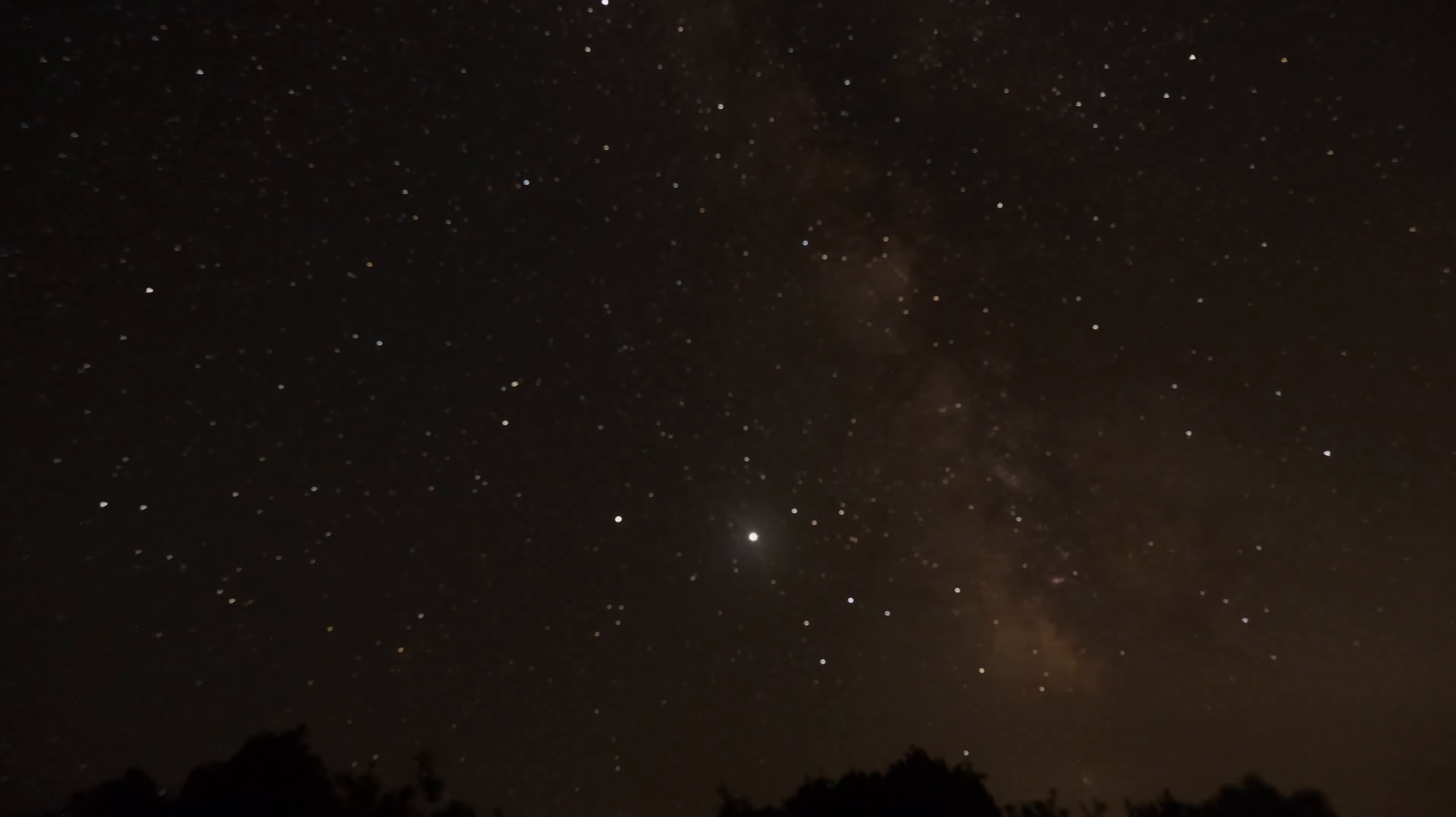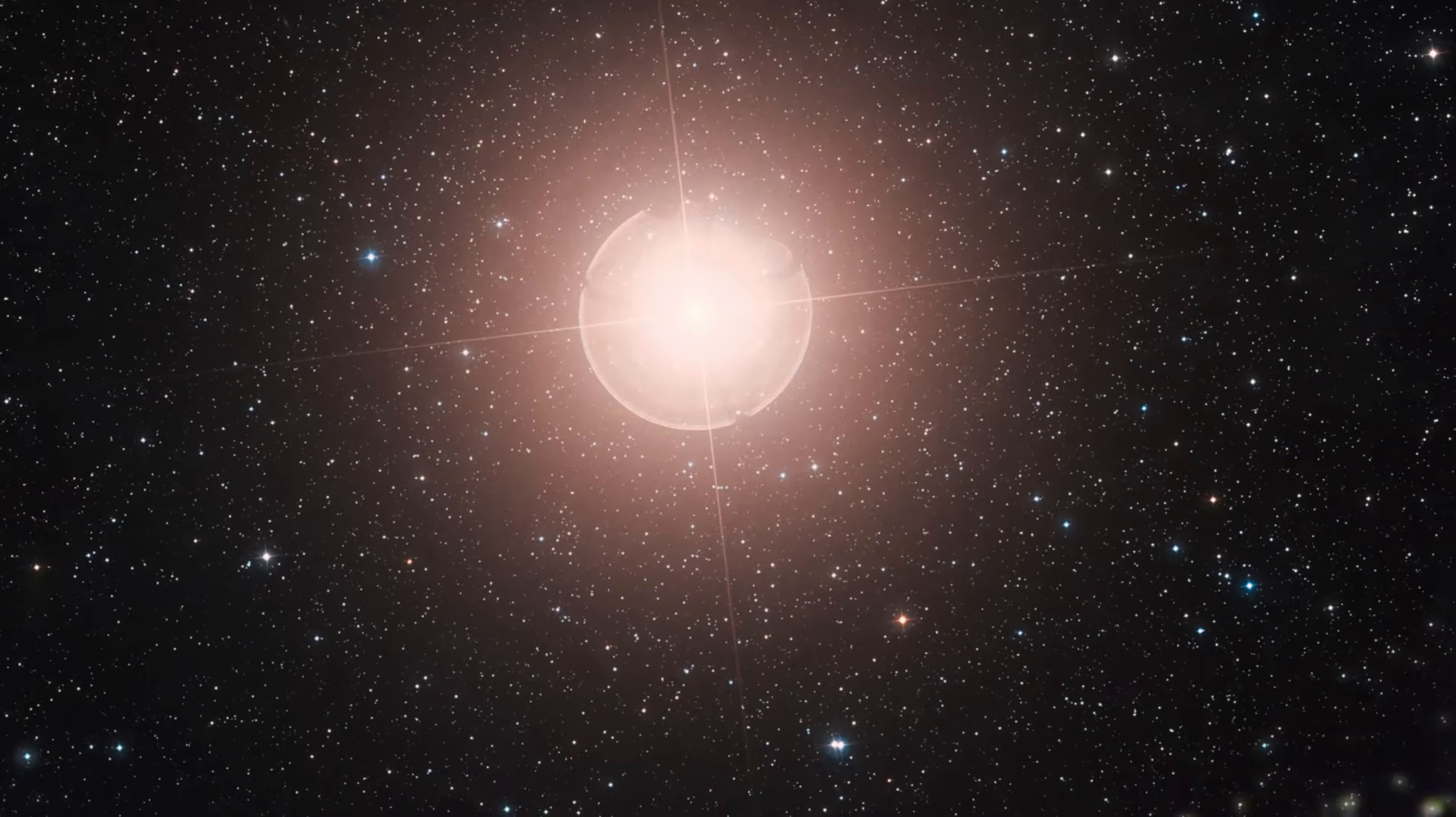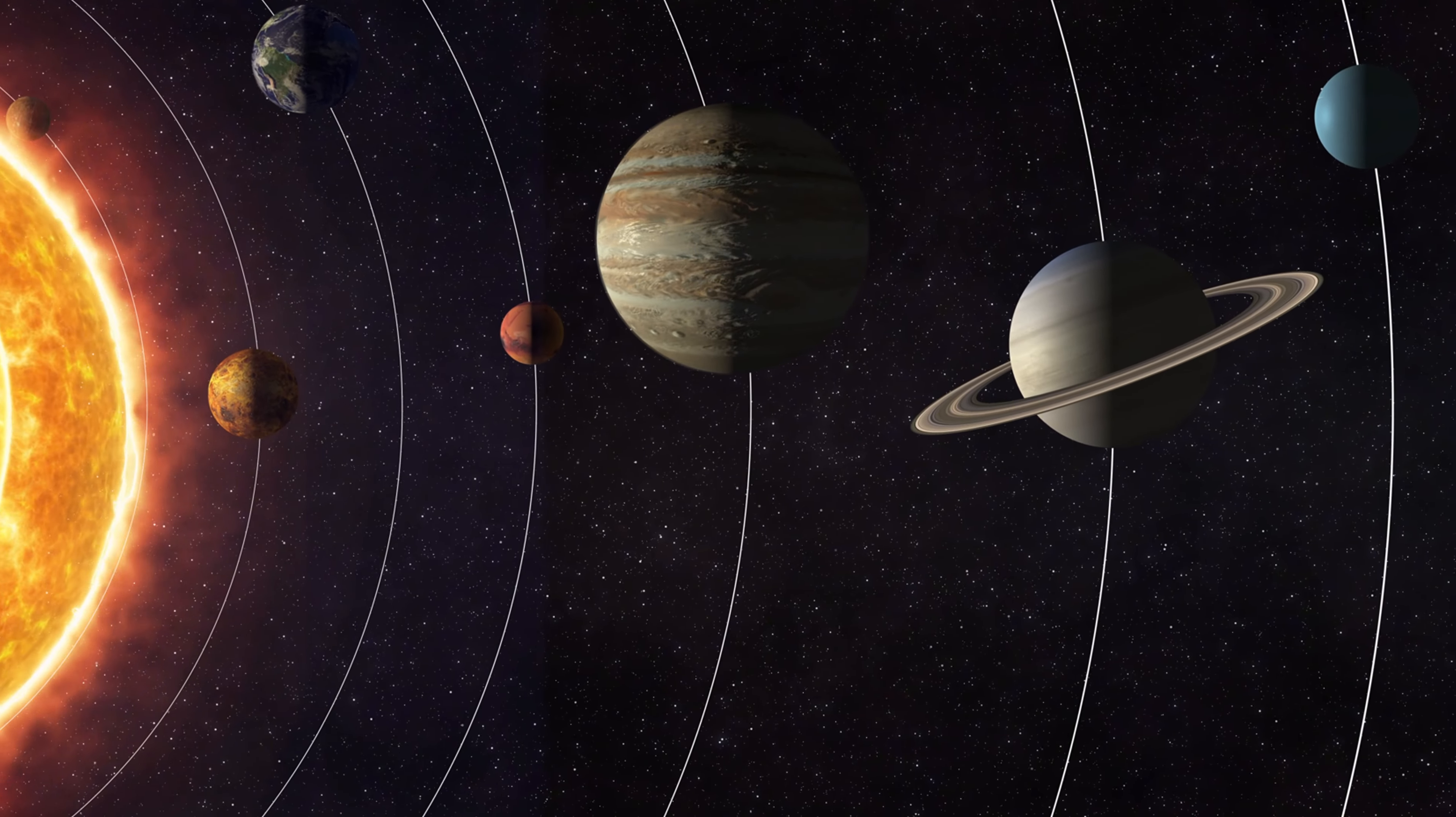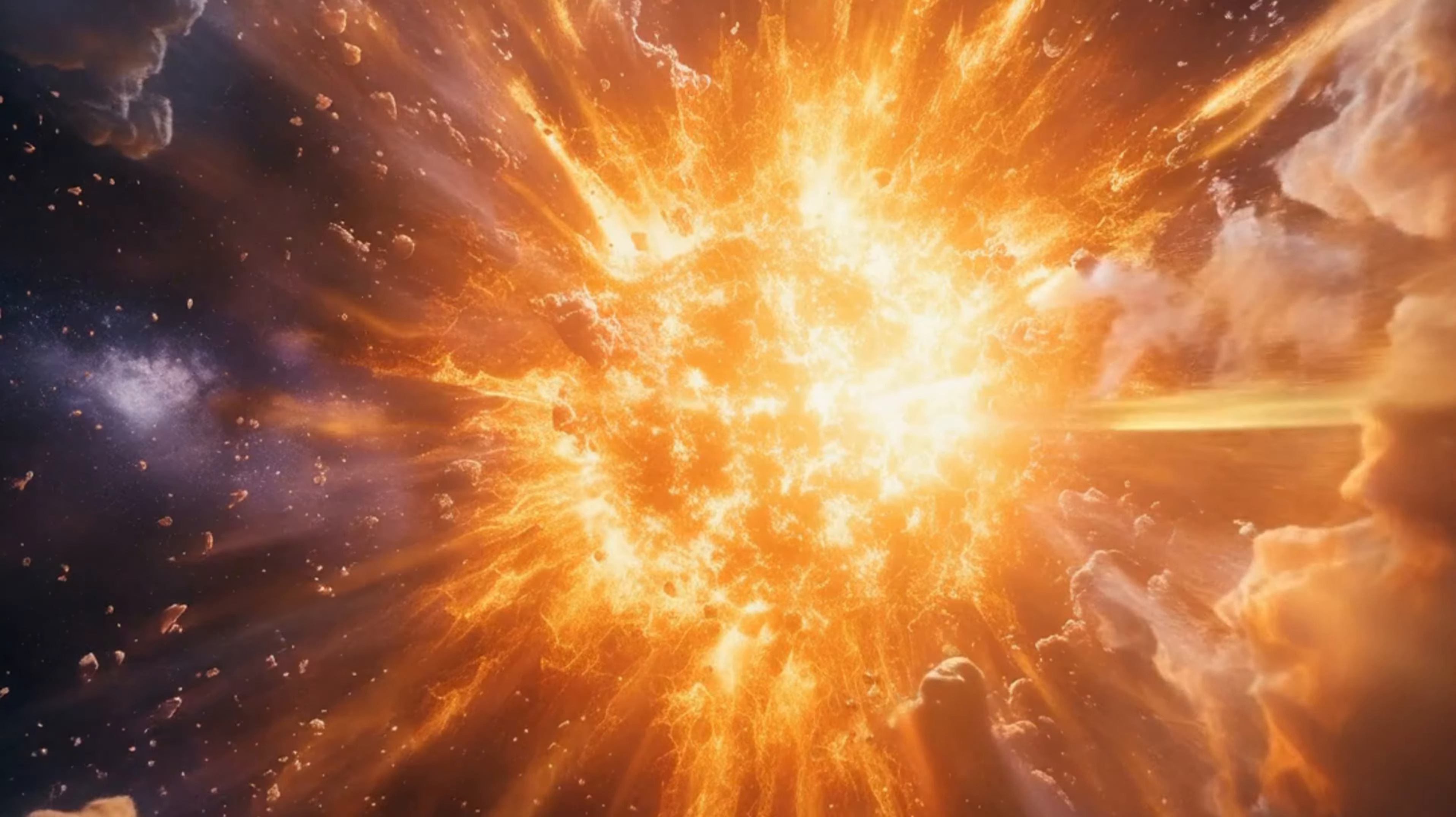Betelgeuse has the potential to reshape our understanding of the universe. Despite its name not being widely known, you've likely admired its brilliance, a radiant reddish shining brightly at the shoulder of Orion, a well-known constellation. Betelgeuse's enormity is staggering. If placed at the heart of our solar system, its outer surface would extend beyond Jupiter's orbit. This colossal star, easily observable, continues to captivate us.